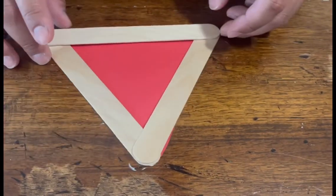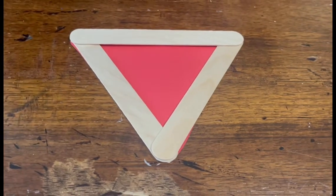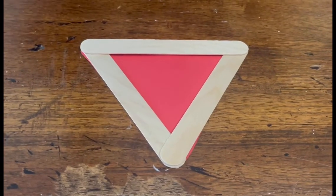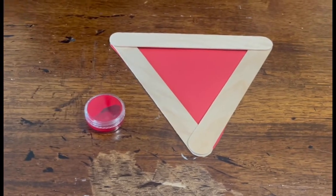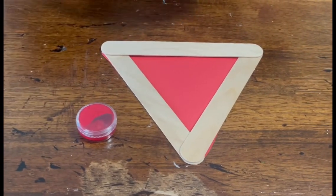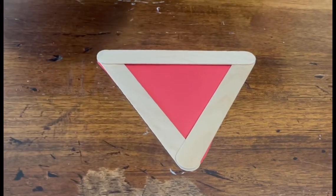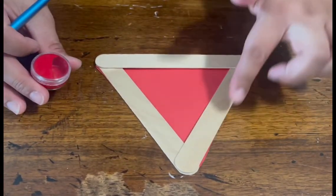And then wait for it to dry, okay. And then while it's drying up, we can now get our red paint and your paintbrush, and then we will just be painting the popsicle sticks.